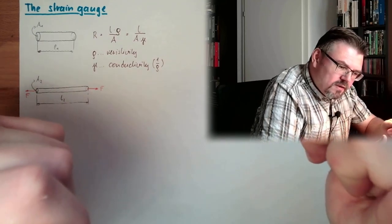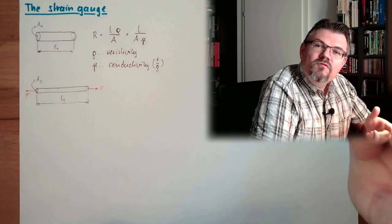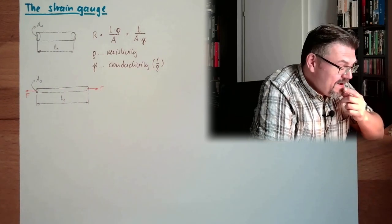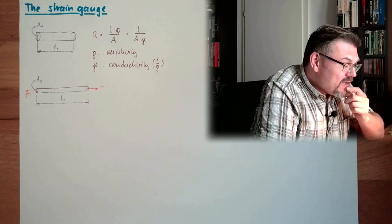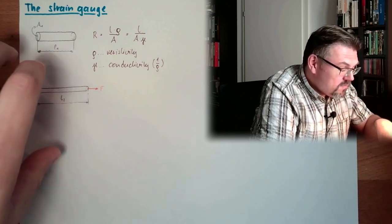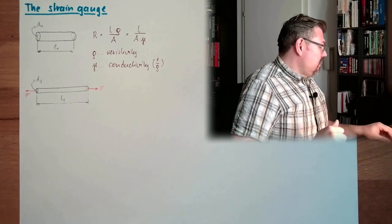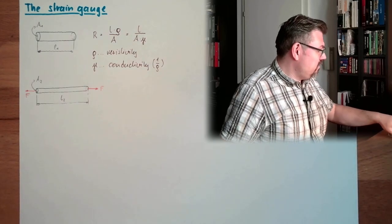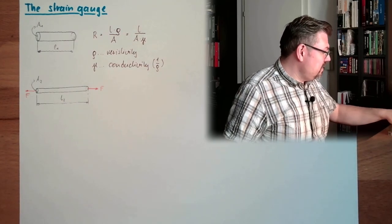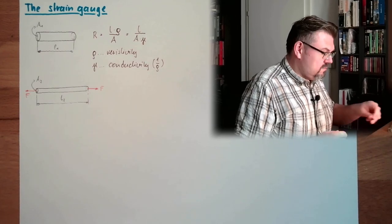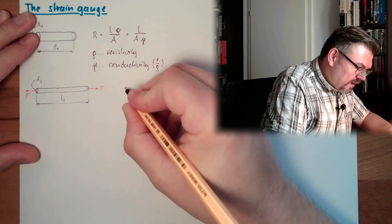Apply strain to it. Measure the resistance. If you measure the change of the resistance, then this is according the length change. So, there is this relationship that we have somewhere at delta R.